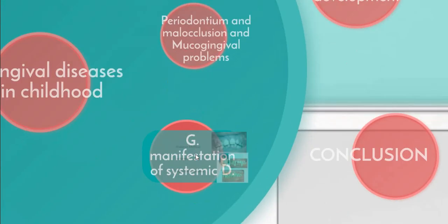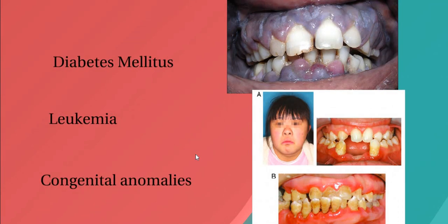Regarding the gingival manifestation of systemic disease, we know that systemic diseases resulting in periodontitis are more often seen in children than in adults. And many diseases, however, are expressed differently in children than in adults.